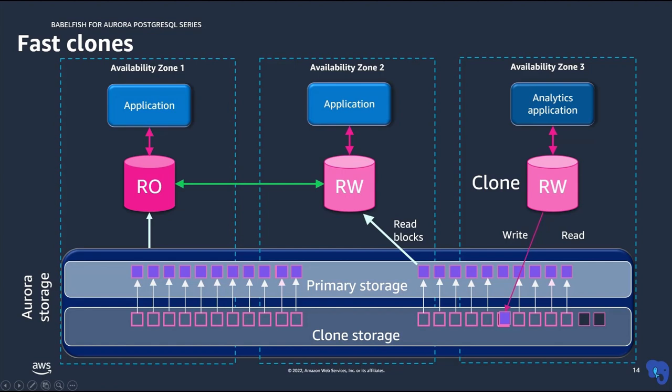For writes, since the clone should contain a copy of the data at the time it was created, it copies only the pages that are modified after you create your clone to the clone storage. In this way, you can use clones to give a copy of the production database to downstream departments like analytics, dev, testing, or QA to test a new feature on a copy of the production database, which brings agility to your business.